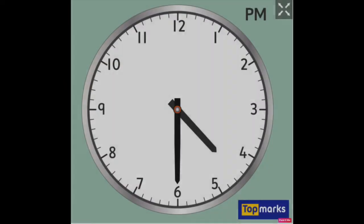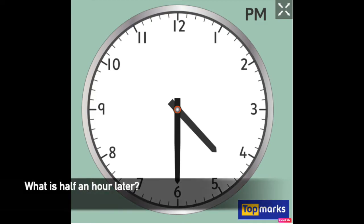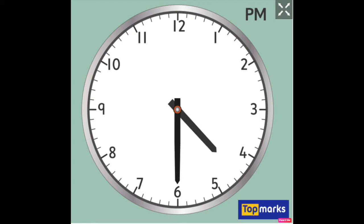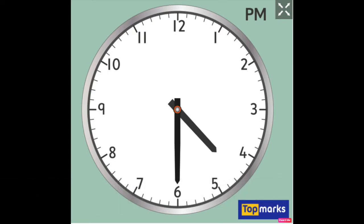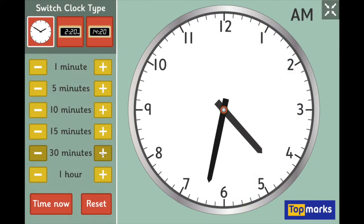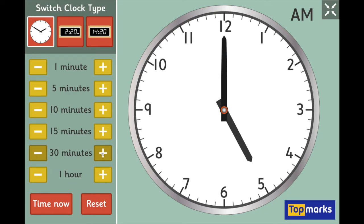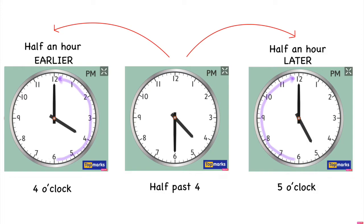Now we are going to try and figure out half an hour later. So here is half past four again. Can you guess what half an hour later than half past four will look like — so thirty minutes after half past four? Half an hour later is five o'clock, as that's the next hour. So if we look at all three clocks together, half an hour earlier than half past four was four o'clock, and half an hour later than half past four was five o'clock.